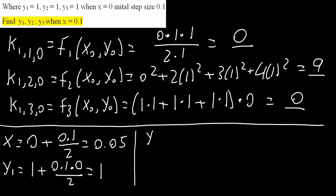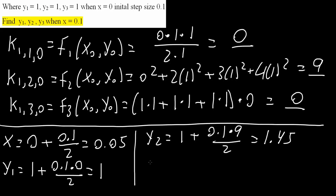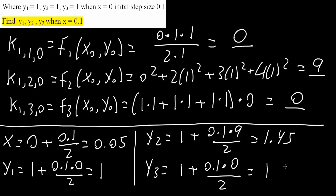Next y2: the initial value was 1, plus 0.1 times k — which was 9 — divided by 2, giving 1.45. Next y3: the initial value is 1, plus 0.1 times the k value which was 0, divided by 2, giving 1 again. Now using this information we will continue the cycle, solving k2, then k3, then finally k4, to get the answer.